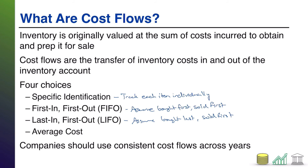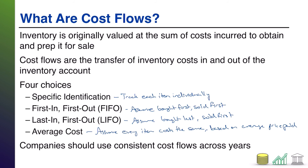The last choice is average cost. Average cost means you assume every item costs the same based on the average price paid. You can see this doesn't necessarily fit the milk or computer example as well as LIFO and FIFO did, but it makes a lot of sense — you just say, I have a pile of inventory, I bought everything at different prices, so why not average all the prices together and value them all the same. That's what average cost does, and that's a very logical way to look at your inventory.